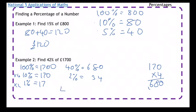So 42% is going to be 680 plus 34, which is 714. And remember it's in pounds, so £714.